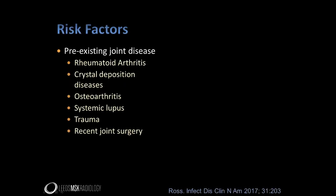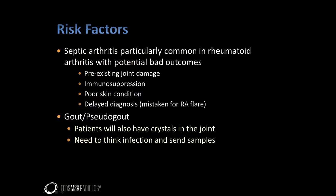Many causes of joint disease will predispose to joint infection, including the main forms of arthritis, previous trauma to a joint, and recent joint surgery, even when inoculation of the joint has not occurred at the time of surgery. Joint sepsis is a particularly common complication of rheumatoid arthritis and can lead to catastrophic outcomes. The risks are high, because besides the pre-existing joint damage, patients are frequently immunosuppressed and often have poor skin condition, allowing easier access for the infection.